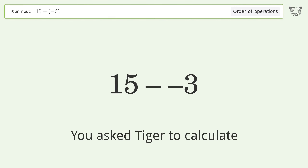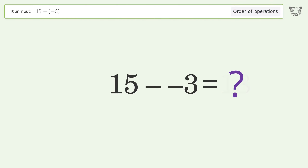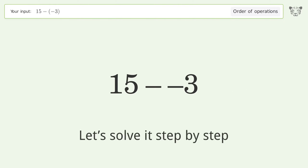You asked Tiger to calculate this. It deals with the order of operations — the final result is 18. Let's solve it step by step.